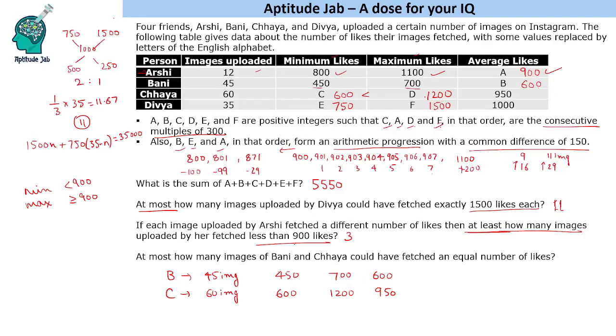We need to consider a lot of things. Average is 600, we have to maximize 700. Let's say we have x images of 700 and 45 - x images of 450. You can do this by allegation also. So 450 and 700, we need to balance at 600. This is 100 and this is 150, so that is 2:3 ratio. 2:3 means 18 images and 27 images. So we can have a maximum of 27 images with 700 likes.